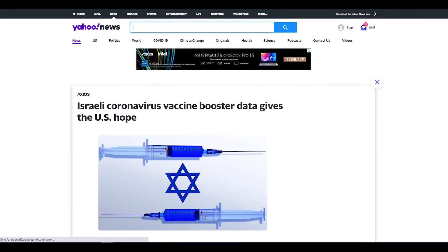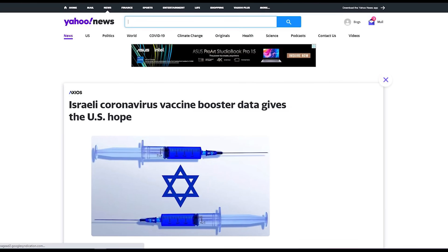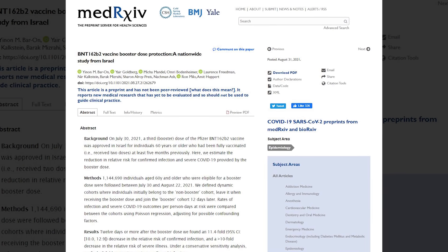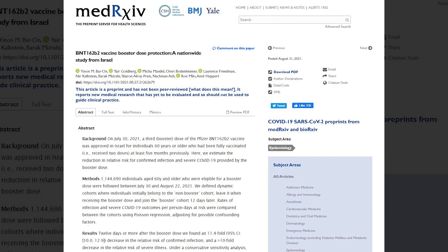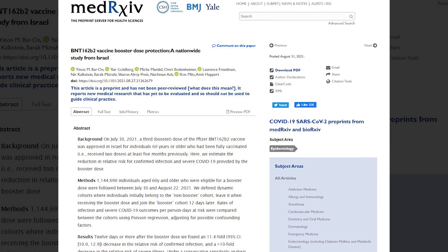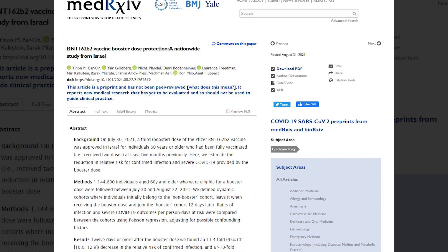According to Yahoo, the Biden administration may use positive data to push boosters in the US. In the preprint uploaded on MedRxiv, researchers in Israel determined that adults who received the third Pfizer shot got their infection risk lowered by 11.4 times, 12 or more days after it was given.